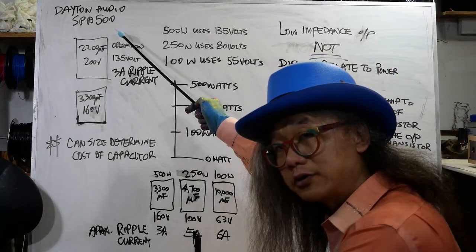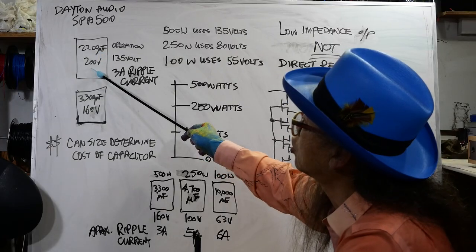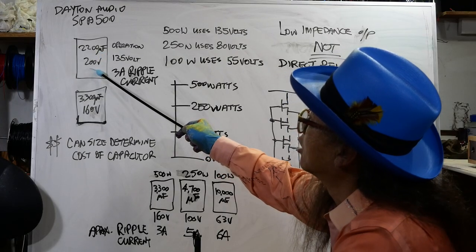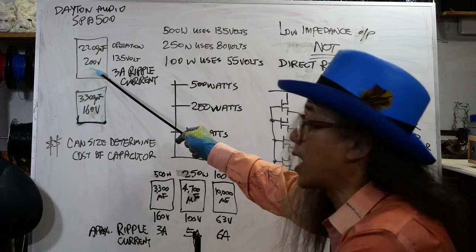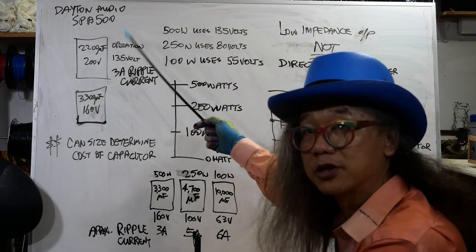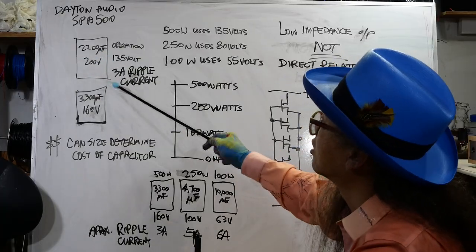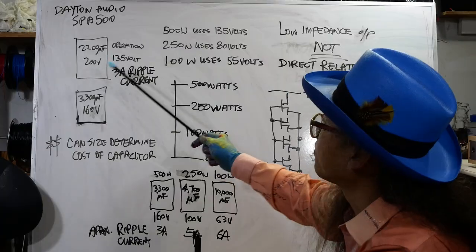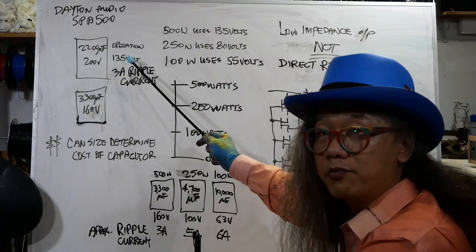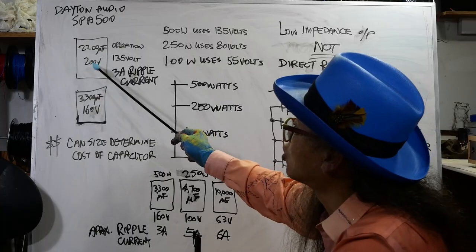Using the Dayton Audio SPA 500 as an example, it uses two pieces of 2200 microfarad 200 volt caps. I'm just going to simplify - it's 2200 microfarad, they have plus and minus, so it's multiplied by two, one per rail. Now the actual rail voltage is 135 volts, but they use a 200 volt cap. I just don't get that one.